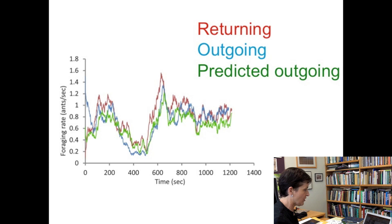To understand how colonies regulate foraging, we do experiments where we change the rate at which foragers return. We collect the returning ants as they're coming back to the nest, put them in a box, and that brings down the rate at which foragers are returning. But also the rate at which foragers go out goes down because they respond to the returning foragers. And then when we let the returning foragers come back, when this red line goes back up, the outgoing foragers start going out again.